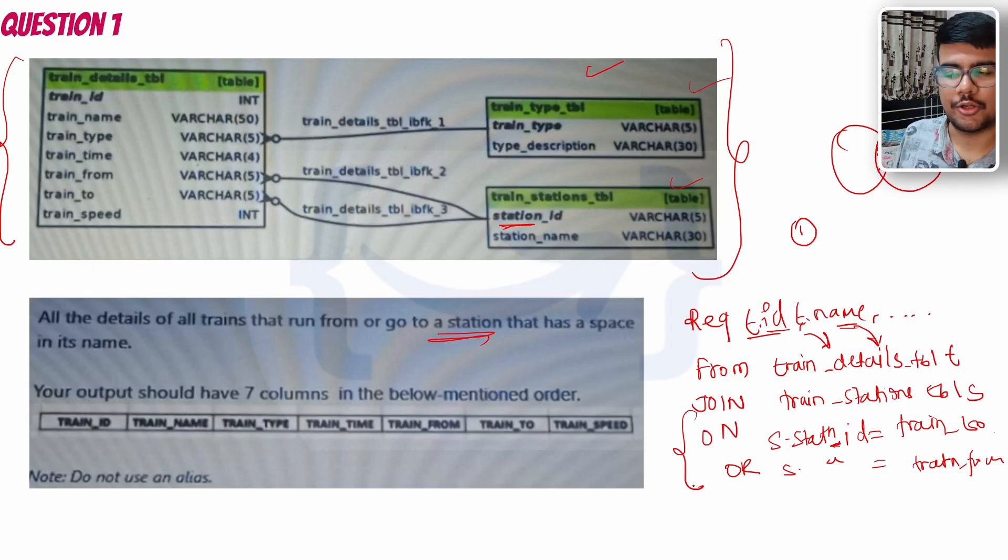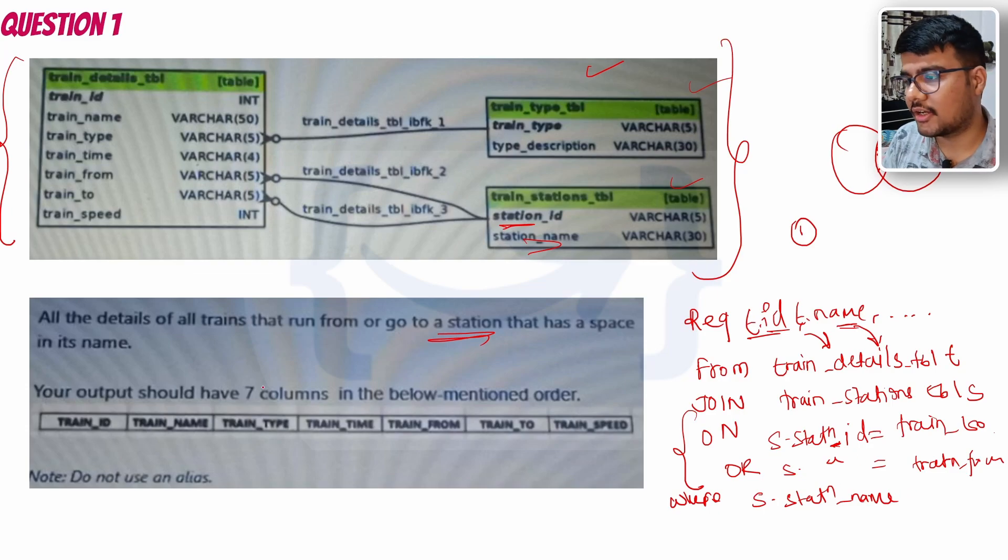Now after writing this join, any kind of operation you can do - just write WHERE and whatever condition you want to apply. Here we want the name, so we can write s.station_name is equals to - or you can put is equals to, not is equals to, because here we need to check with the modulus value.